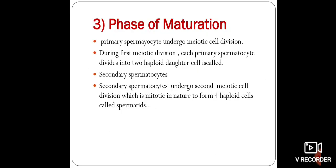The third phase is called the phase of maturation. Here, a primary spermatocyte is formed, which is larger in size, and it undergoes meiotic cell division. In meiosis, the nuclear material or genetic material becomes reduced — it is also called reduction division. During the first meiotic division, each primary spermatocyte divides into two haploid cells called secondary spermatocytes.